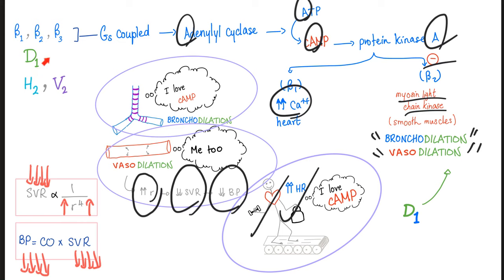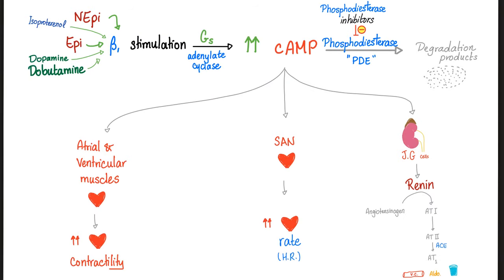That's why you can give a D1 agonist such as fenoldopam to treat hypertension. Pharmacology makes perfect sense once you understand what you're talking about. In case there is any doubt, beta-1 stimulation is Gs — you know the rest of the story. Who's going to stimulate beta-1? Norepinephrine, epinephrine, isoproterenol, dopamine, and dobutamine.